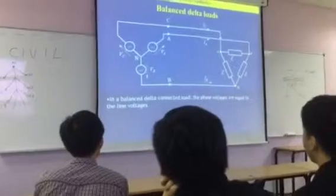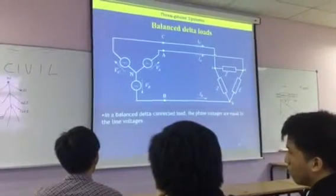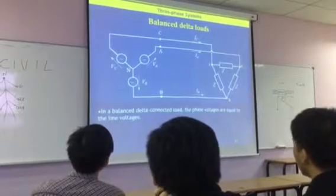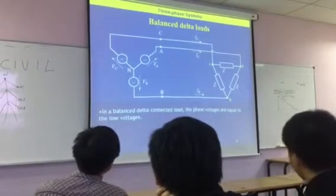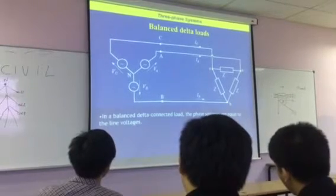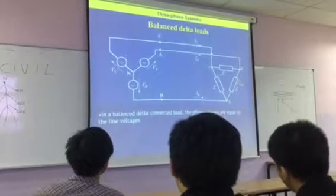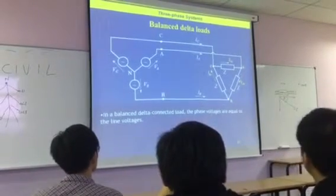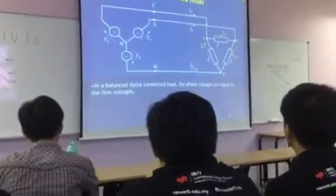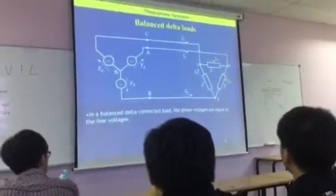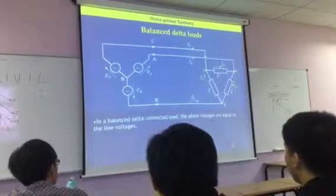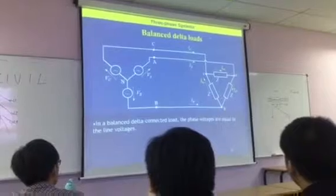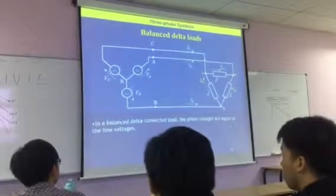That is for the star arrangements. Now, for delta for balanced loads, it's slightly different because the phase voltages are equal to the line voltages. This is the key difference between the delta and the star system. We found that for the star connected load, the line voltages were bigger than the phase voltages. For the delta, we find that the voltages are the same.